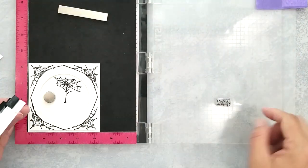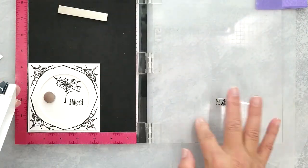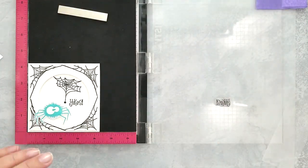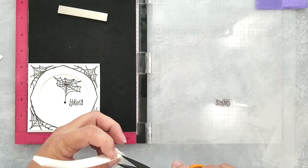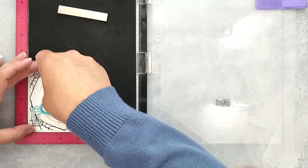I'm adding the Audrey Blue spider to this card, but first I want to stamp the sentiment using VersaFine Onyx Black ink and then I'm adding the spider using 3D mounting foam.